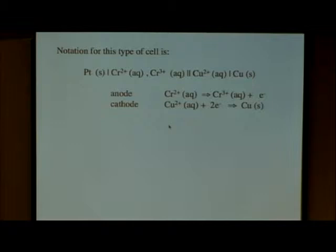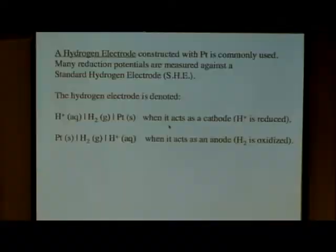Here are our two equations. At the anode, we have chromium plus 2 aqueous going to chromium plus 3 aqueous and one electron. At the cathode, we have copper plus 2 aqueous and 2 electrons going to copper solid. Those are our two equations and how we would write that down.